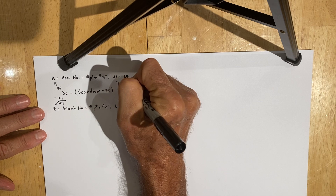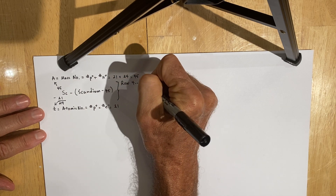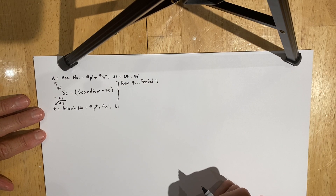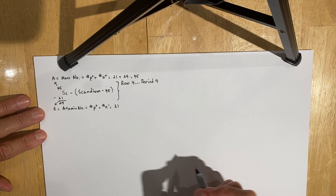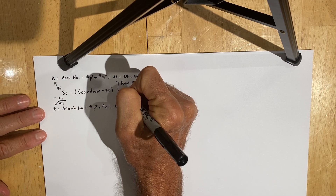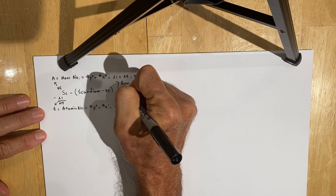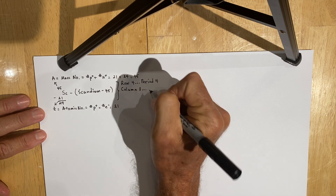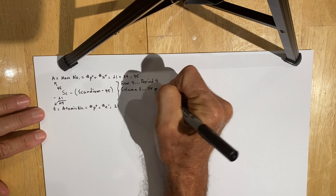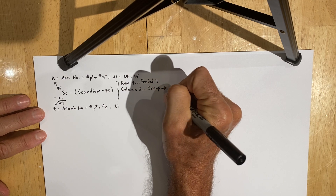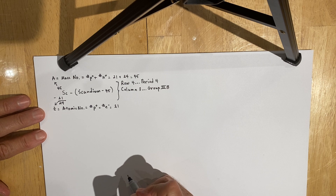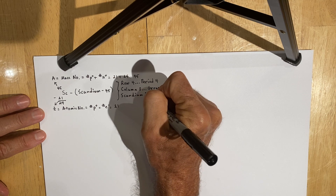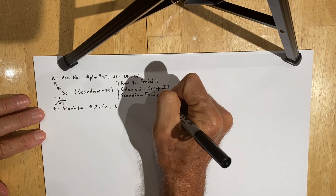Scandium is strategically positioned in row 4 of the periodic table, also referred to as period 4, because it has enough electrons to start filling the 4th energy level. Scandium is also positioned in column 3, otherwise known as group 3B on the periodic table, and it is a member of its own family known as the scandium family of elements, because it is at the top of its own column.